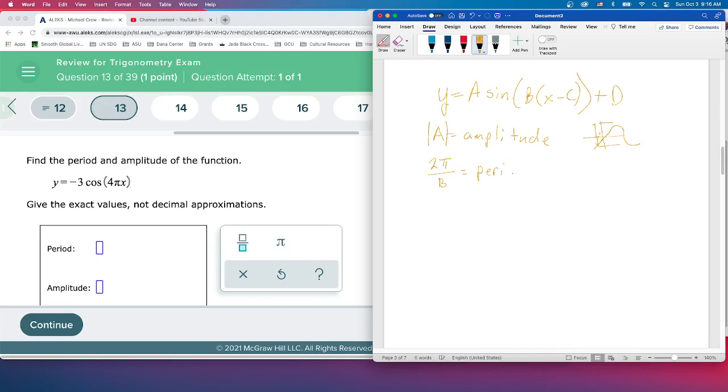Period is how long it takes for a full cycle. A full cycle is one wave, how long does it take for that. The standard is 2 pi all the way around the circle, but as b changes, we can either squish it or stretch it out.